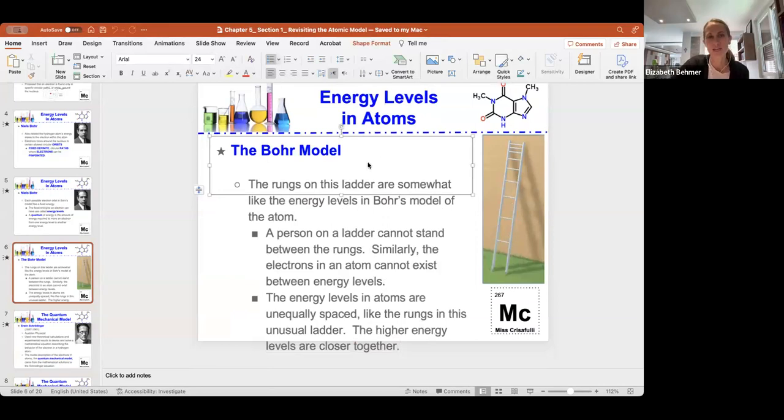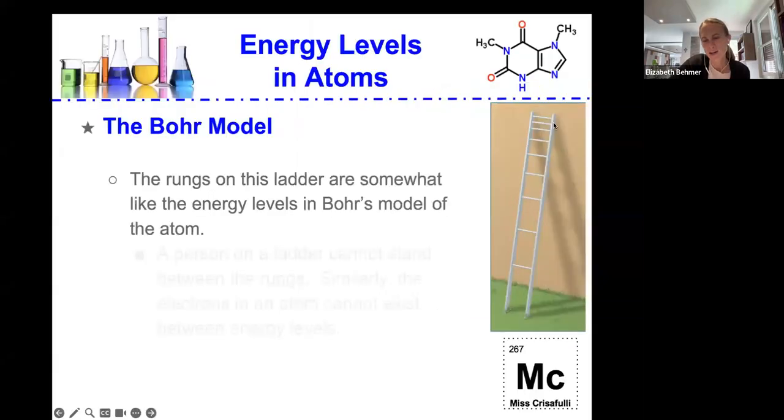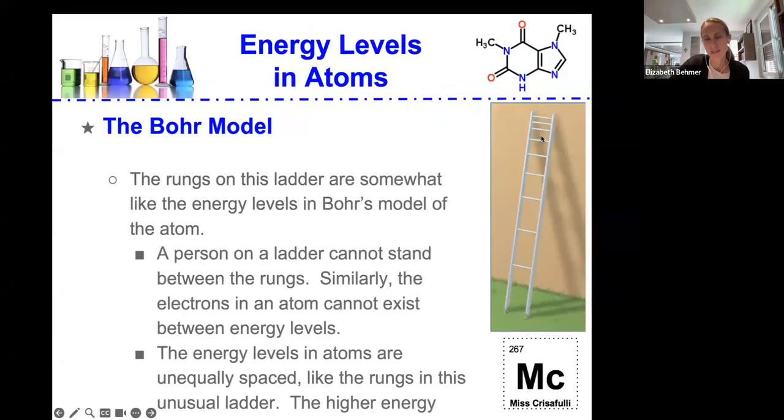So just like this ladder, and I'll go back to my presentation view, the higher energy electrons are closer together, and the same thing in an atom. The higher energy electron orbits will be closer together.